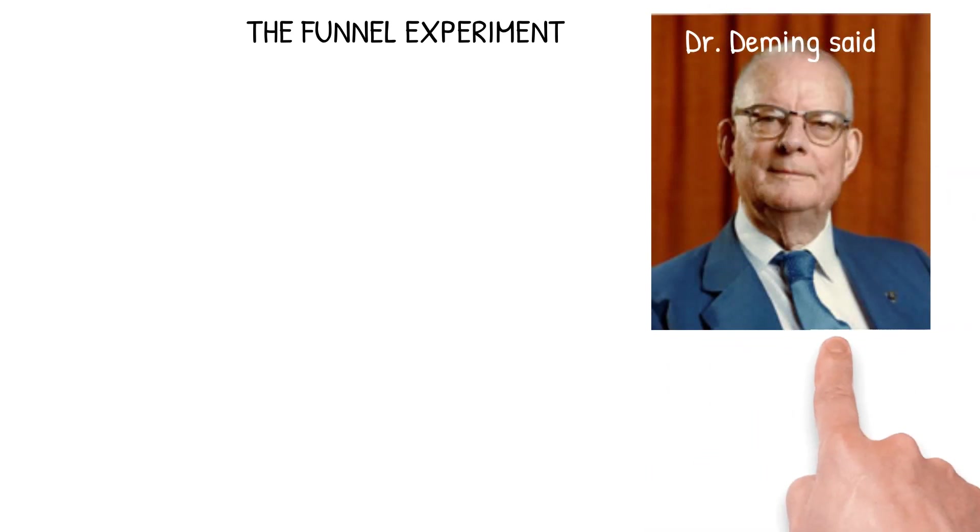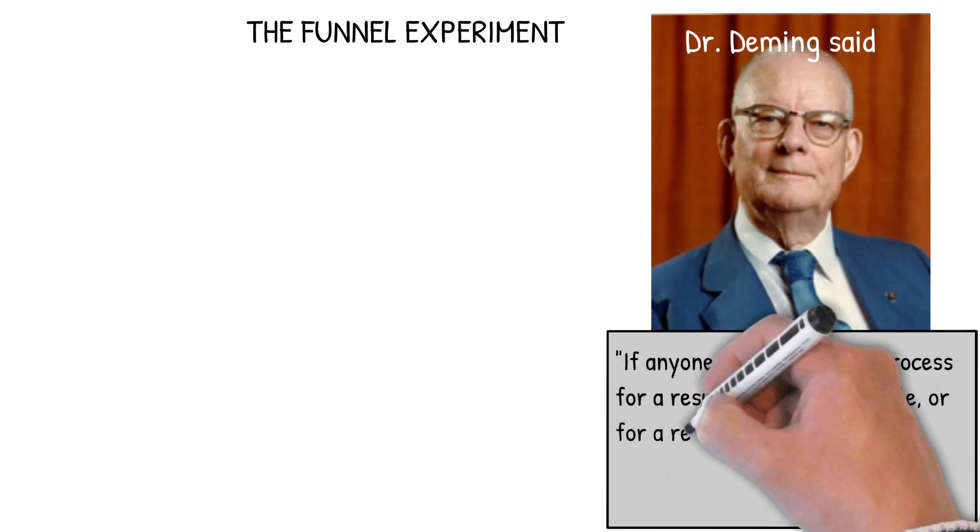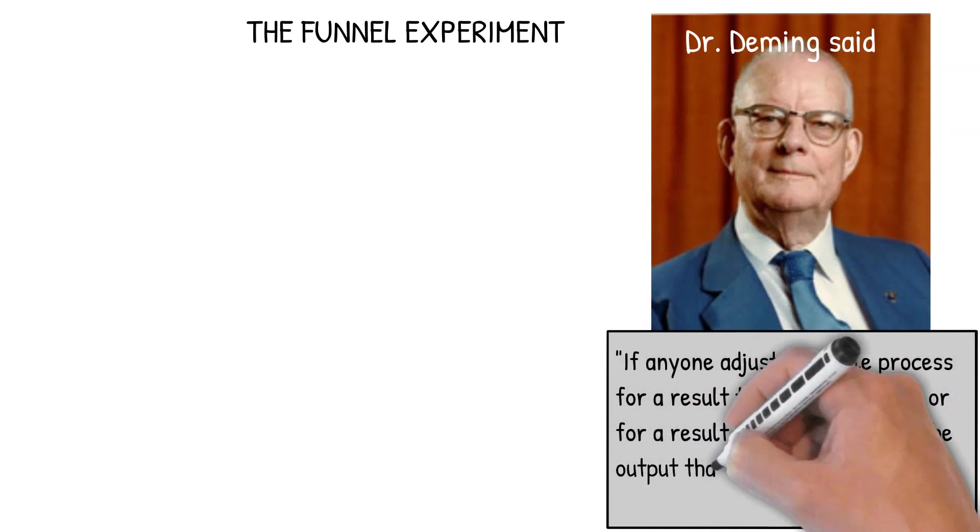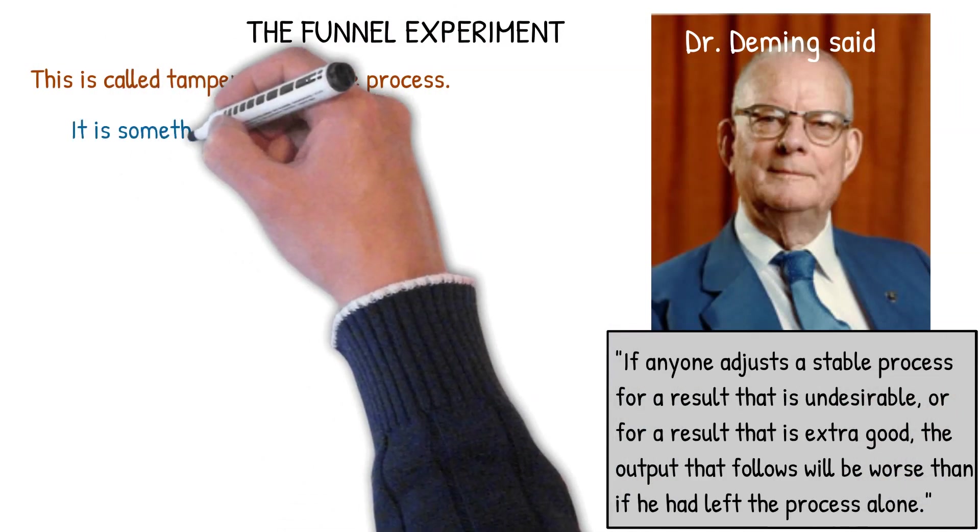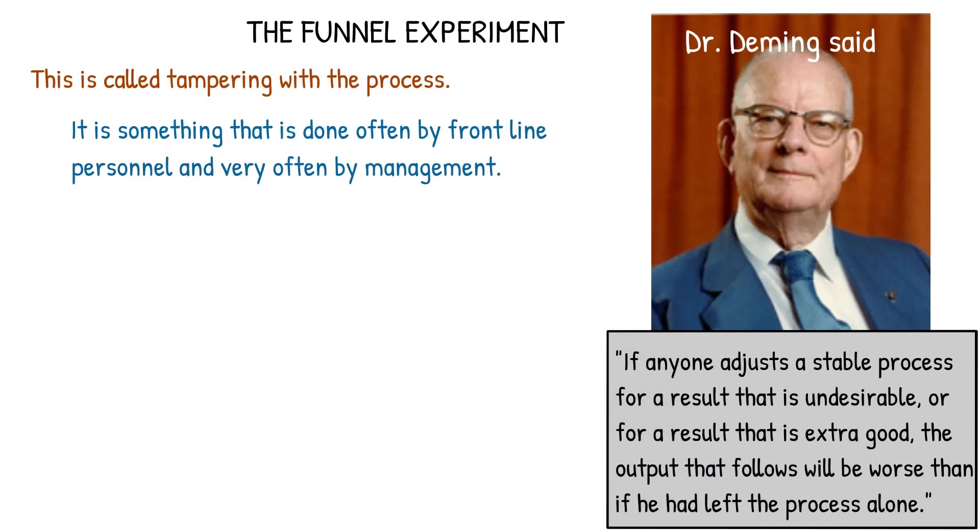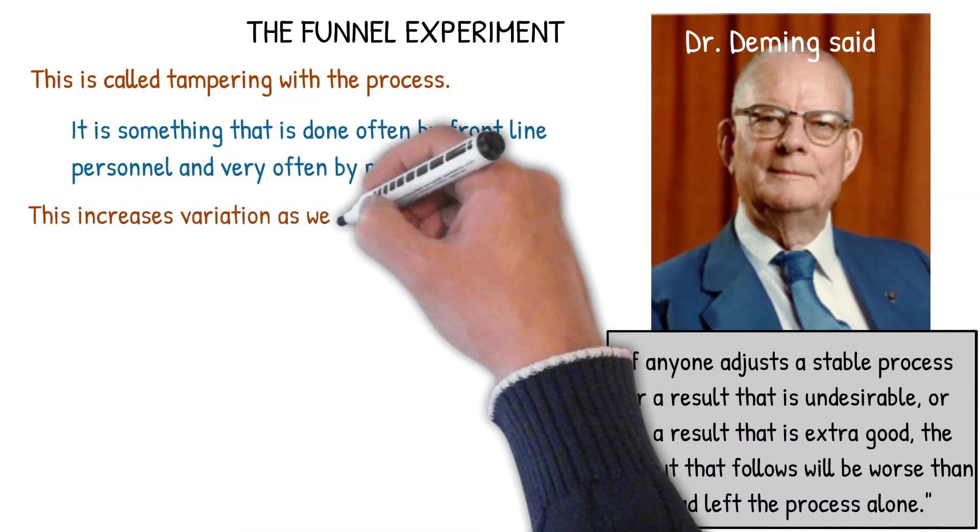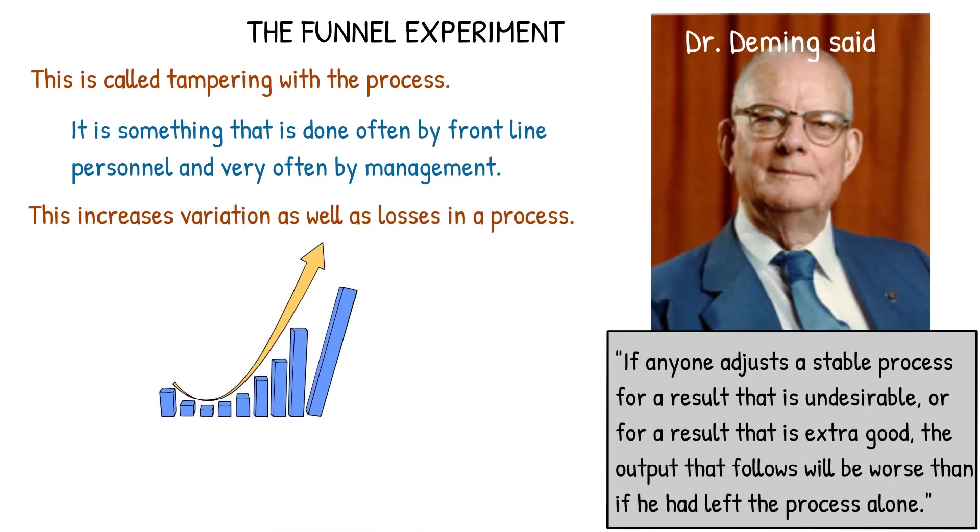So let's talk about the funnel experiment and what we can learn about tampering with the process from it. Dr. Deming said, if anyone adjusts a stable process for a result that is undesirable or for a result that is extra good, the output that follows will be worse than if you left the process alone. This is what we call tampering with the process. It's something that's done by frontline people often and very, very often by management. This increases variation as well as losses in the process. So the funnel experiment gives us insights into what happens when you tamper with the process.